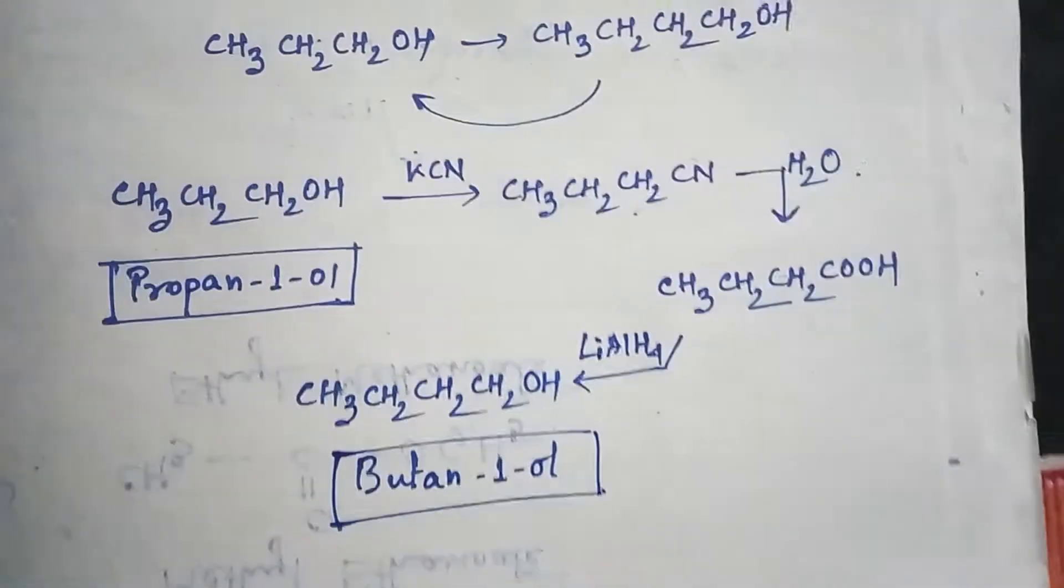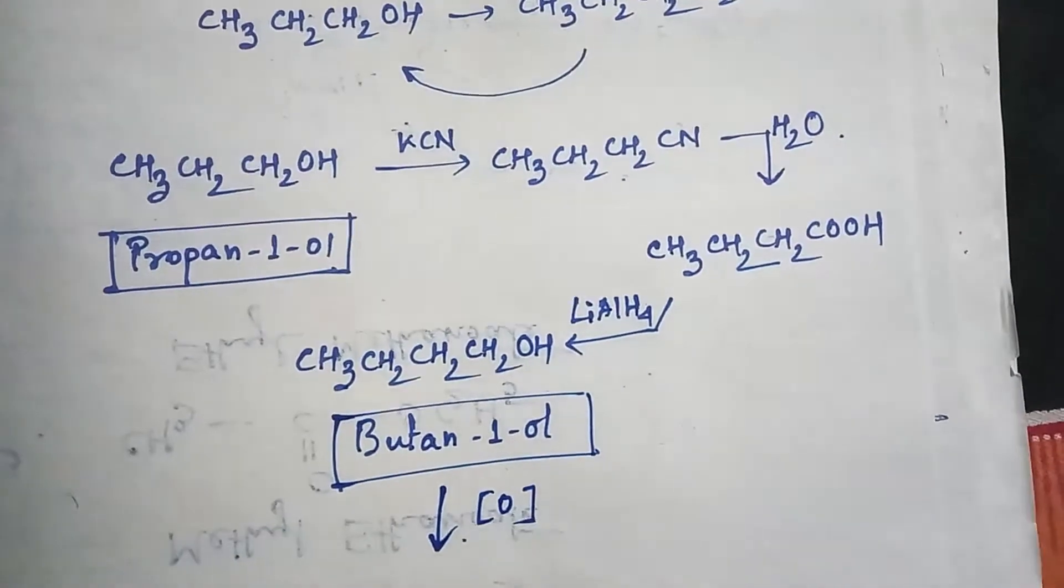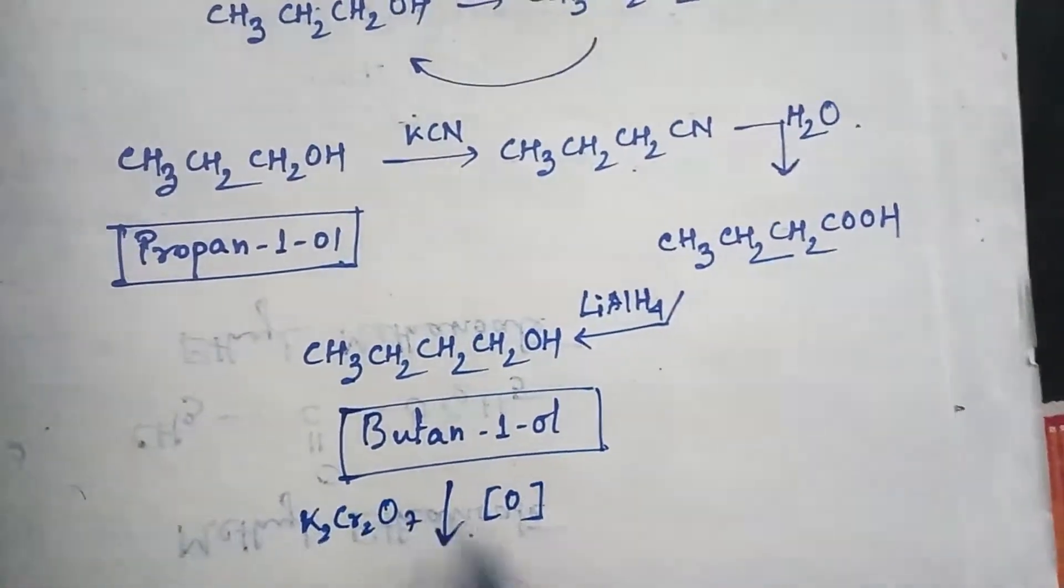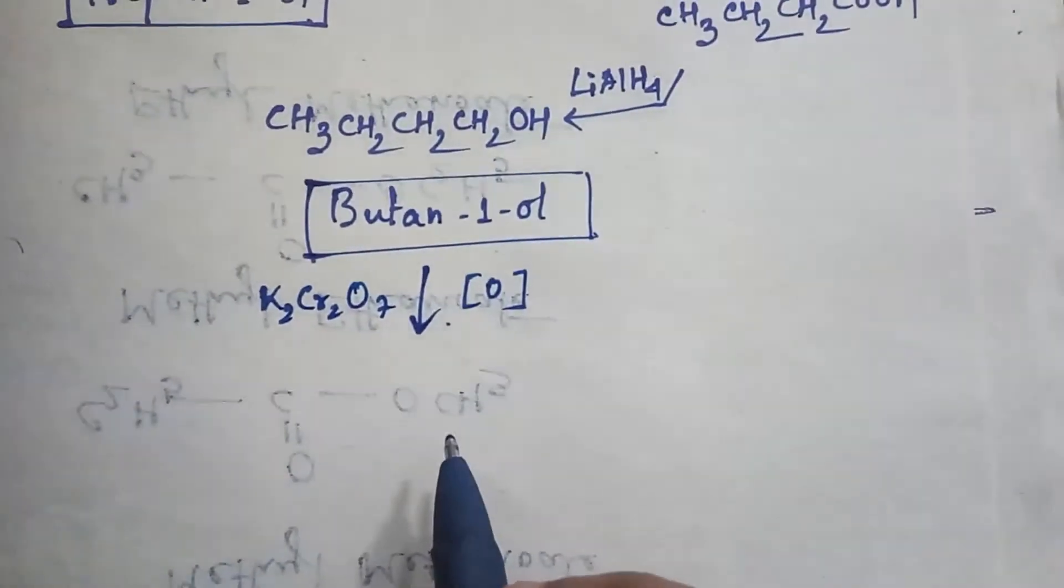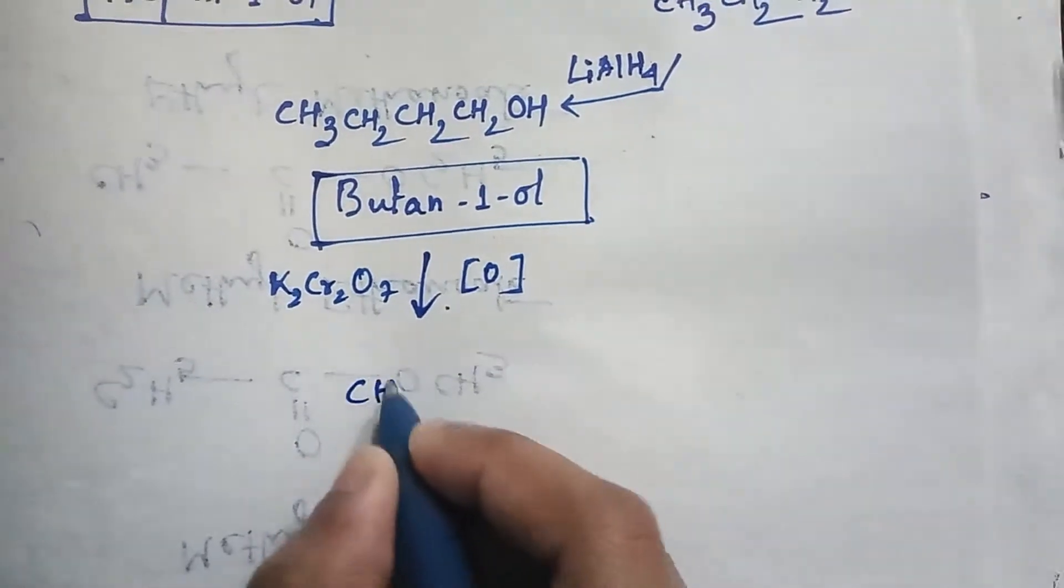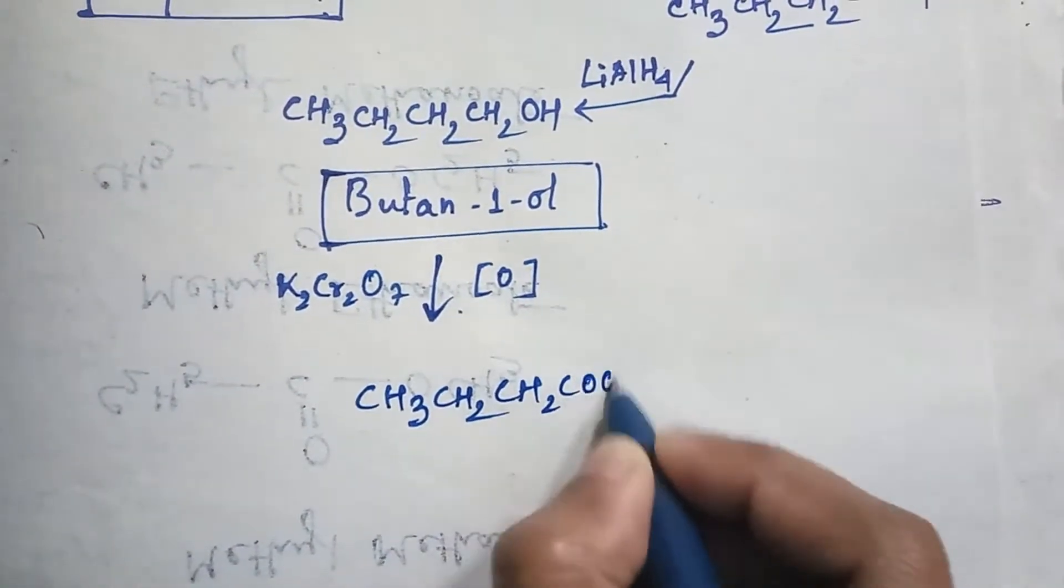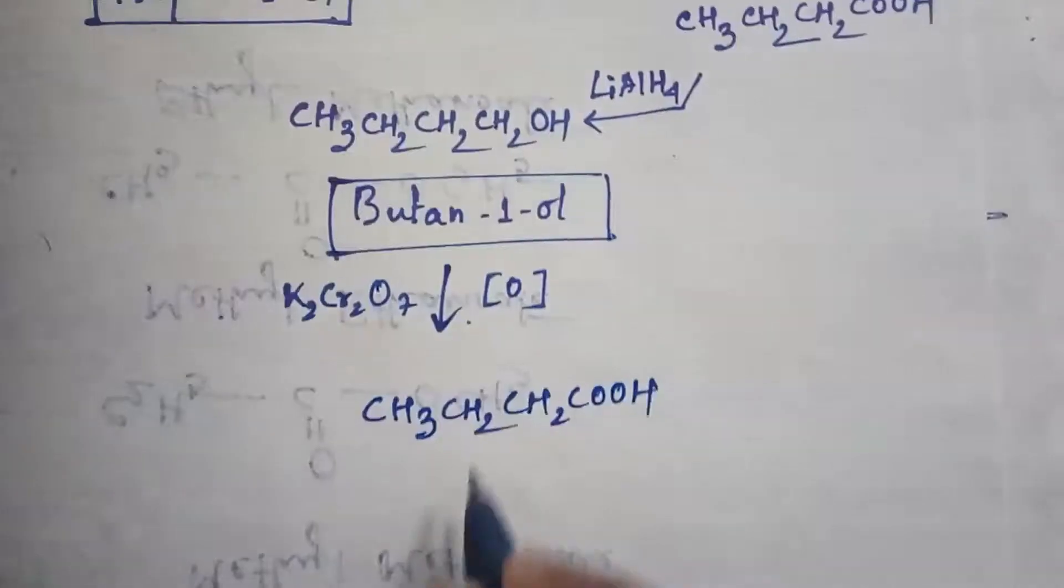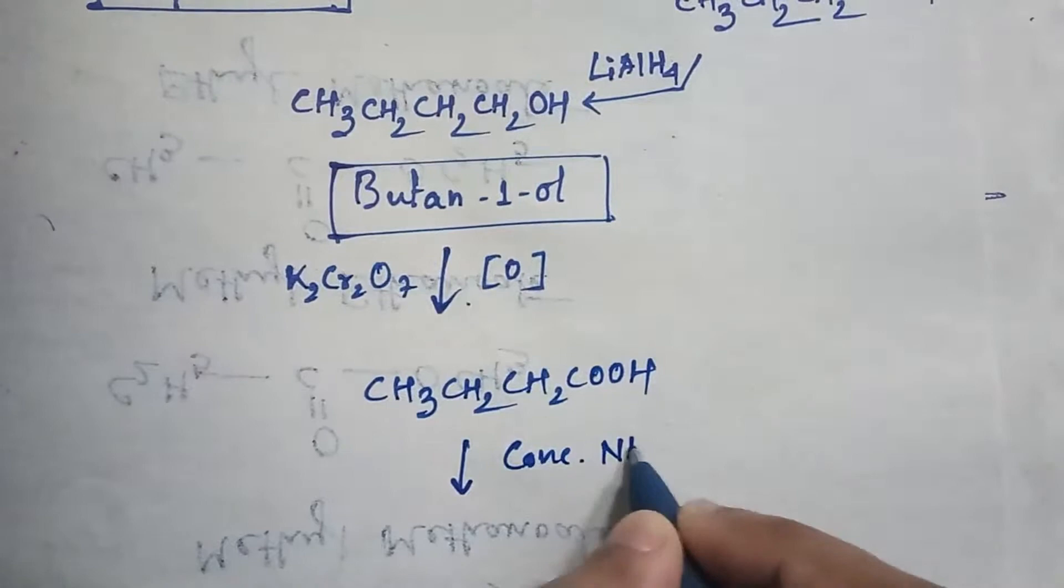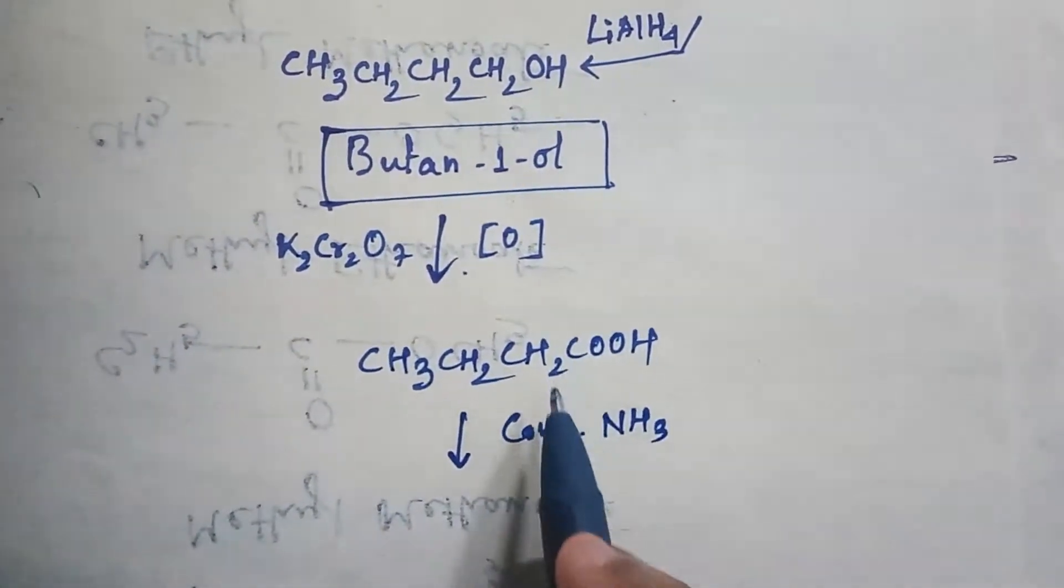What to do? The first step is oxidation by using K2Cr2O7 or KMnO4. If you do oxidation, then this alcohol will convert into butanoic acid. Then if you add concentrated ammonia and heat, then this acid will convert into amide group.